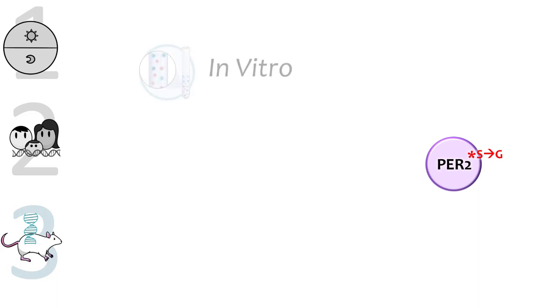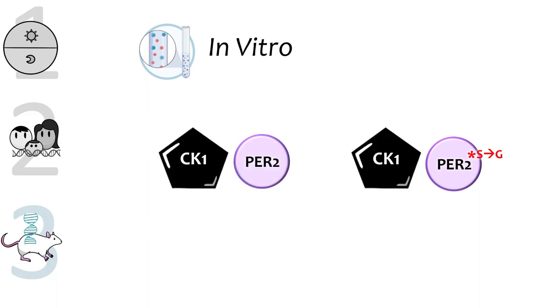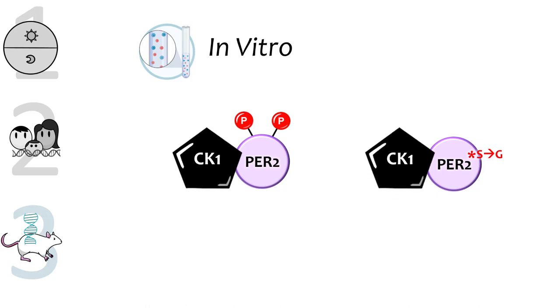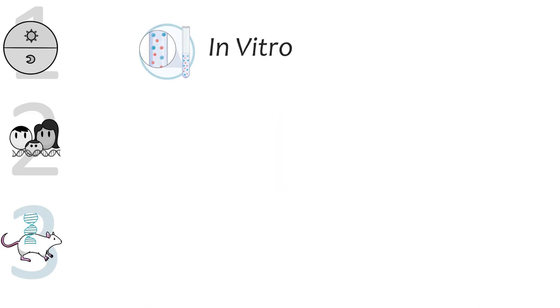With a strong candidate gene in hand, the researchers moved forward to test the effects of this polymorphism on PER2 function using a variety of model systems. This variant was first tested in vitro. Based on prior work in mice and flies, the researchers suspected that this polymorphism affects phosphorylation of PER2 by the kinase CK1 epsilon. They found that CK1 epsilon did in fact bind and phosphorylate normal PER2, but could not phosphorylate the S to G variant. The test results led to the hypothesis that a decrease in the level of phosphorylation on PER2 changes downstream responses and causes FASP.